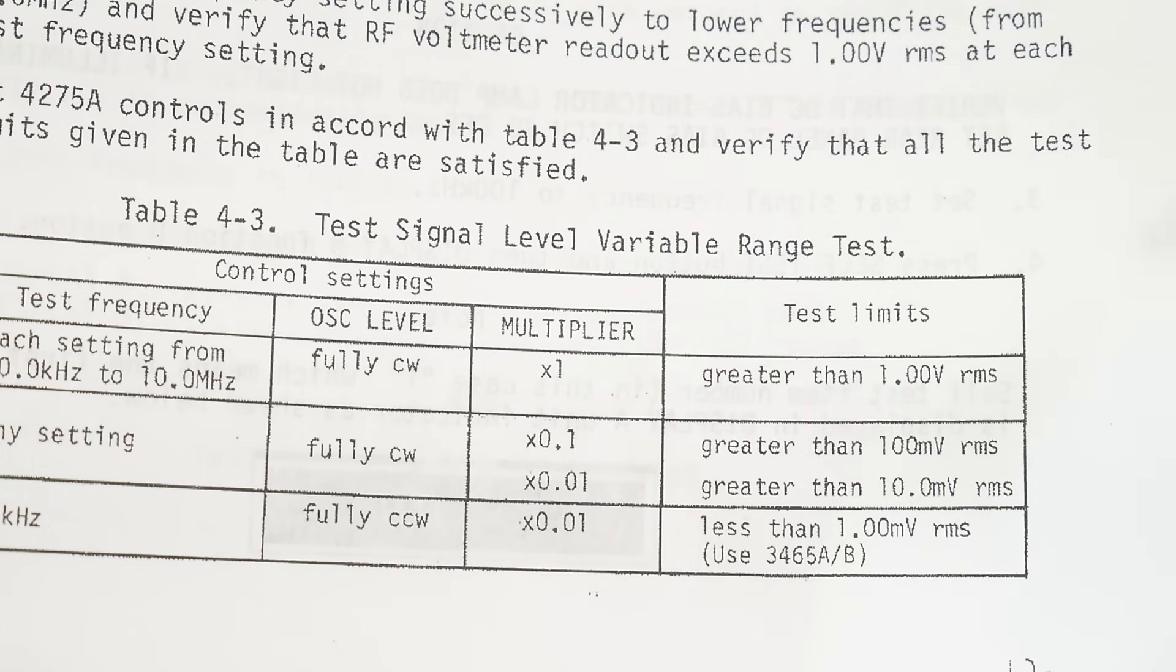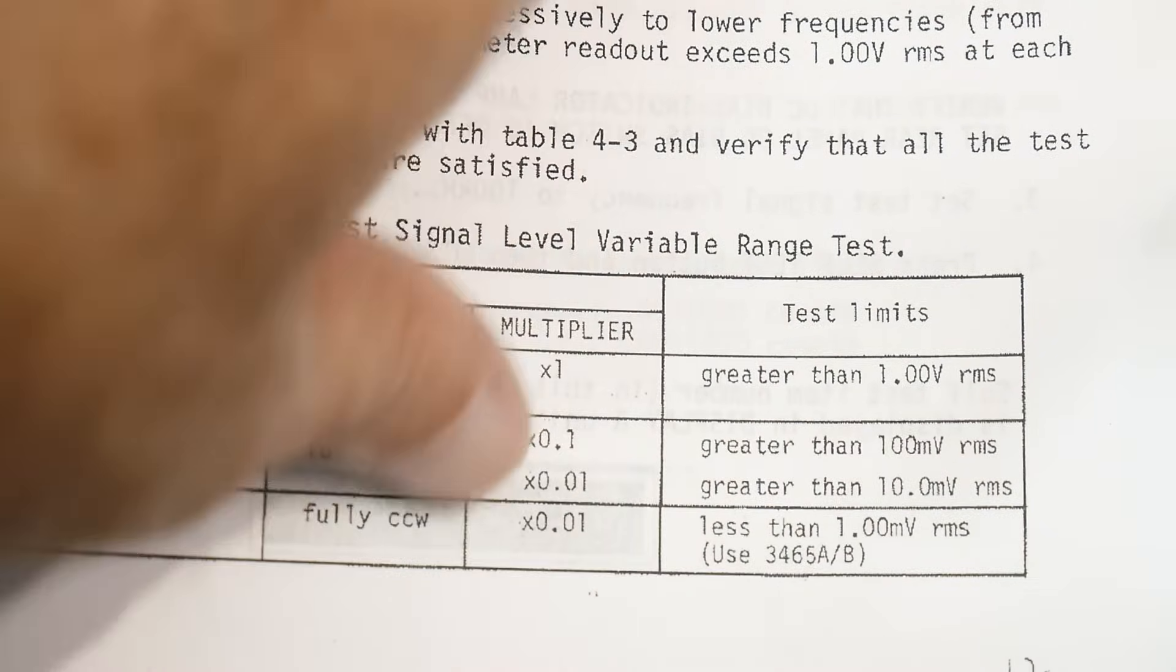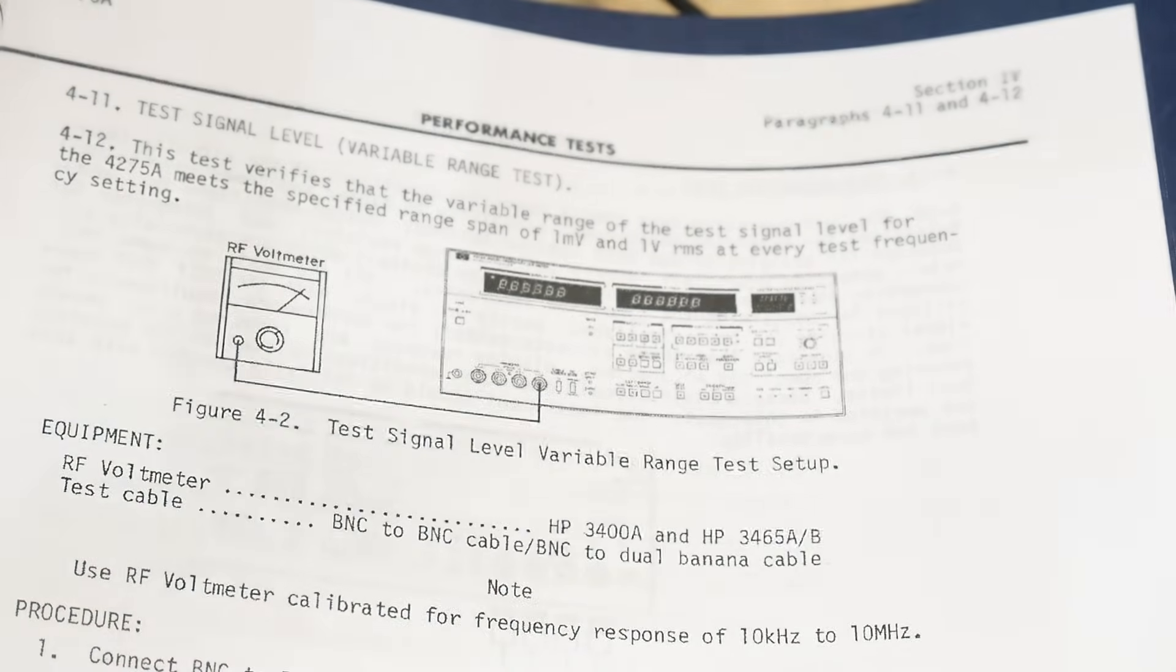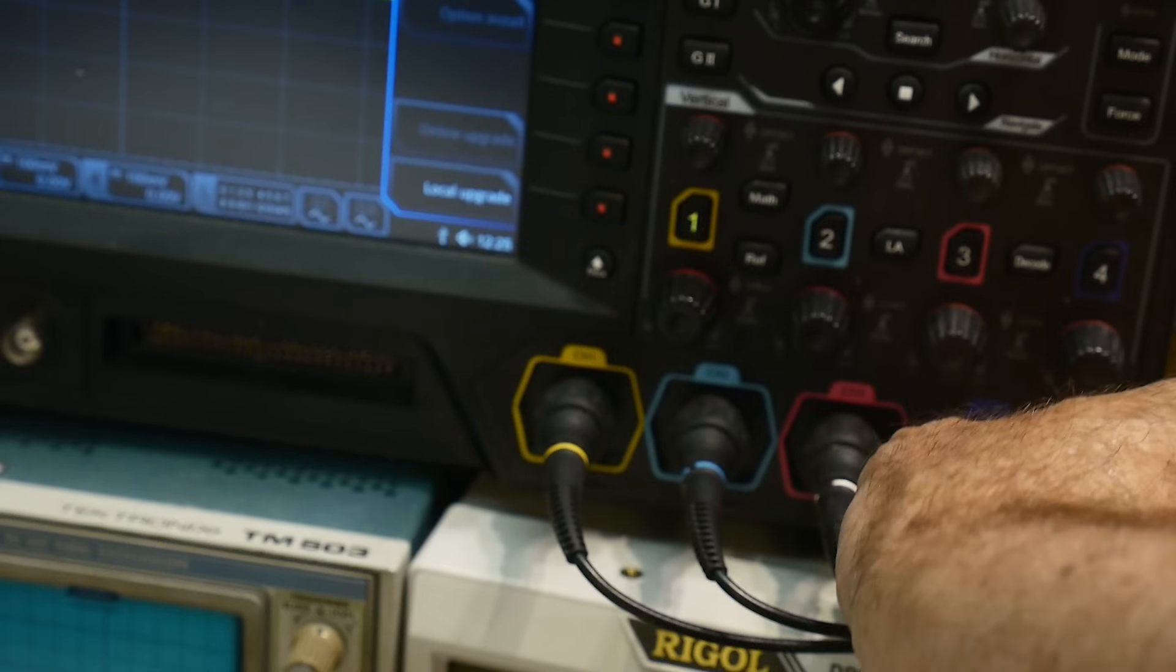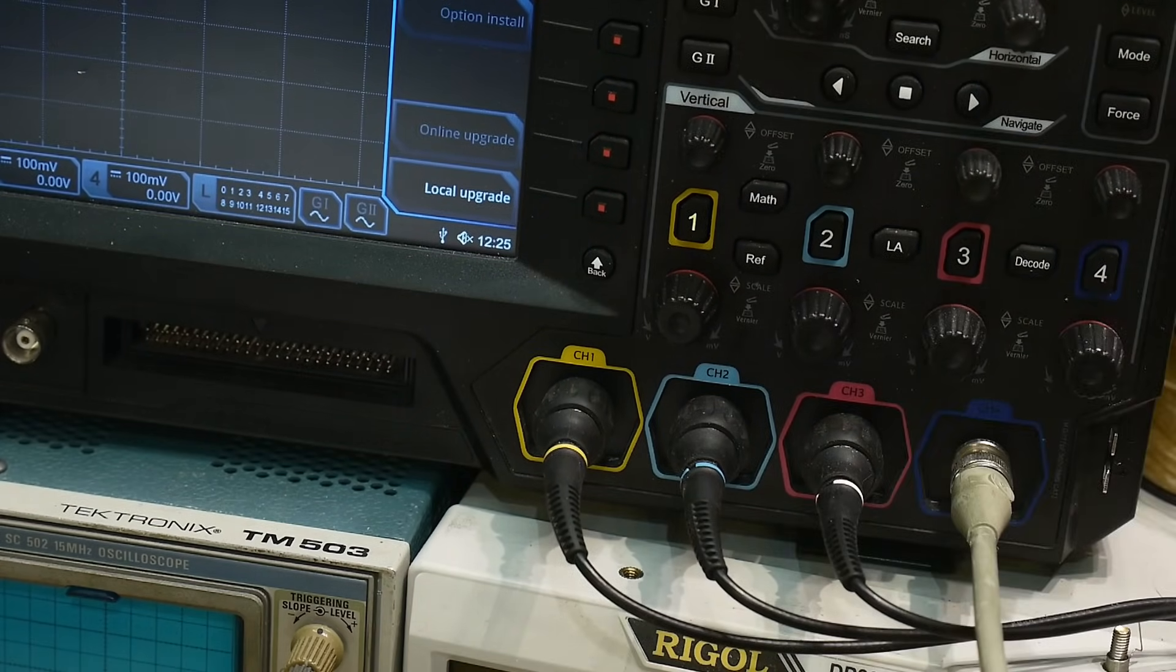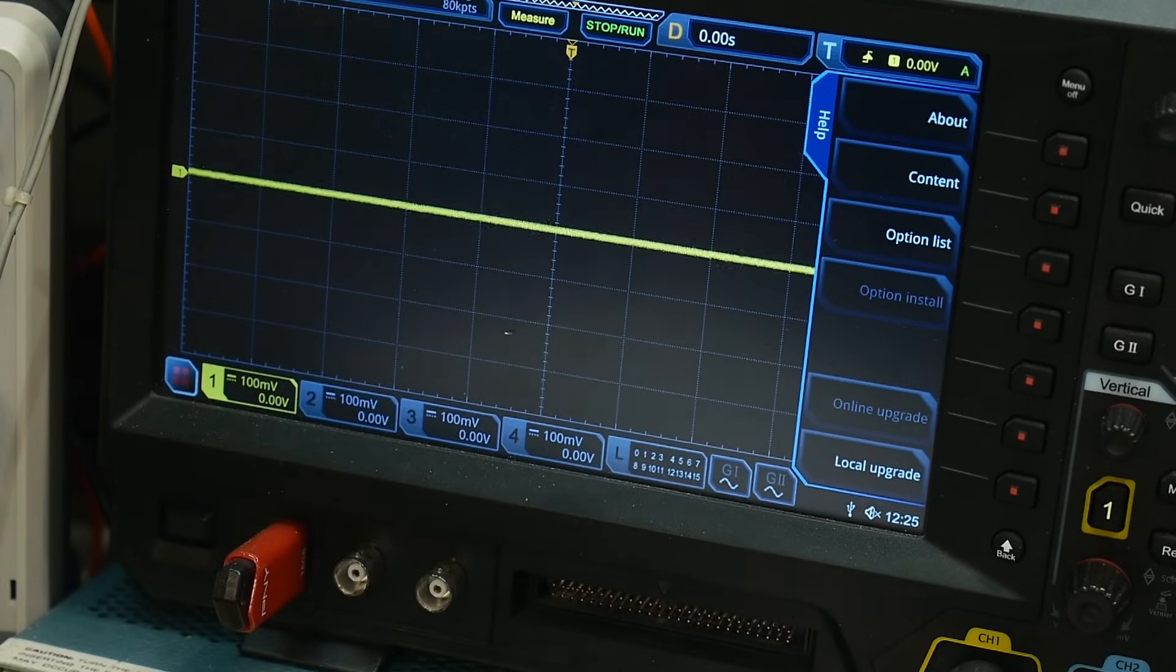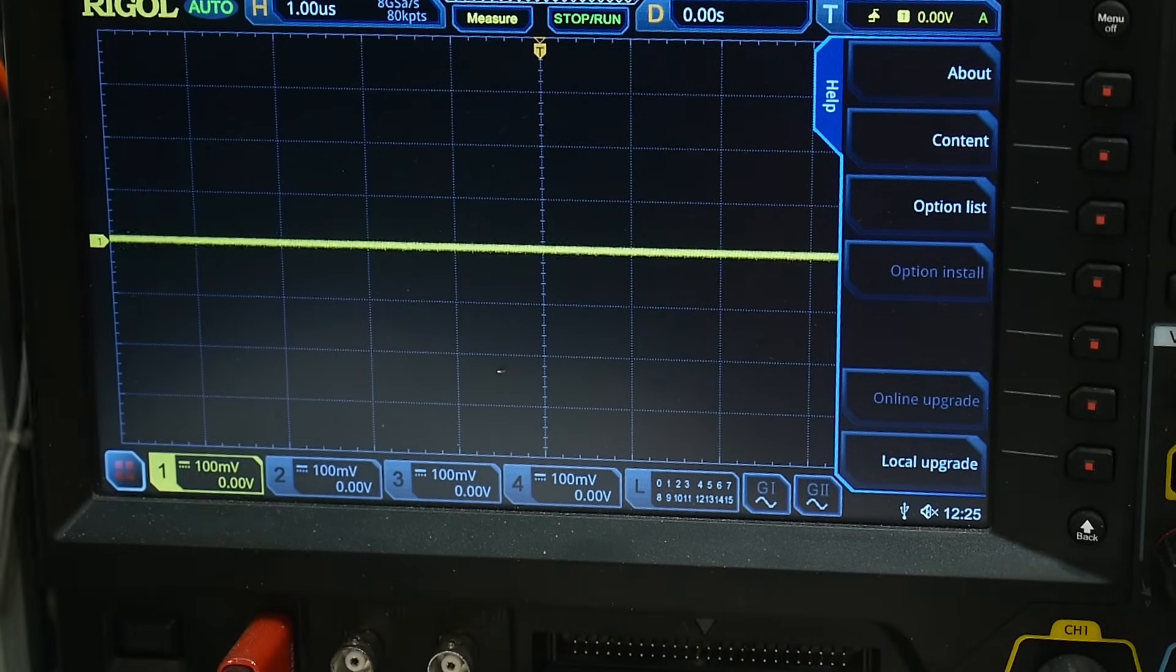It does not say to use a RF load or anything, a 50 ohm loader, so we should just be able to bring that coax that was going to my frequency counter, and we'll bring it over here to the Rigol. I always keep channel 4 open, because that's my BNC input. It just makes it handy instead of having to disconnect other ones all the time.